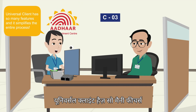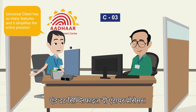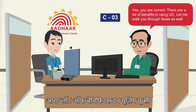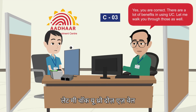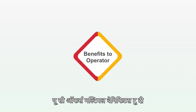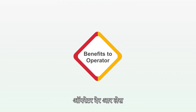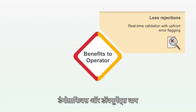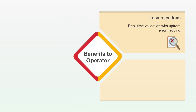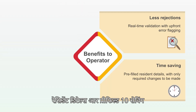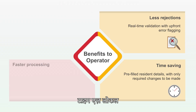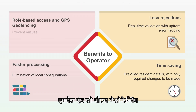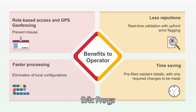Universal Client has so many features and it simplifies the entire process. Yes, you are correct. There are a lot of benefits in using UC. UC offers multiple benefits to the operator: there are less rejections due to real-time validation of demographics or documents by flagging errors up front. Resident details are prefilled, thus saving time. As local configurations are eliminated, there is faster processing. Role-based access and GPS geofencing prevent misuse.